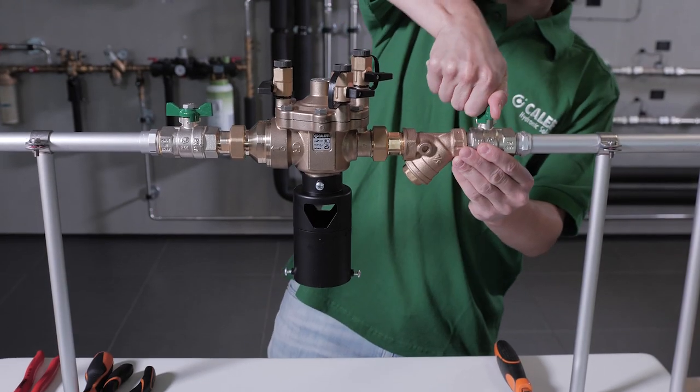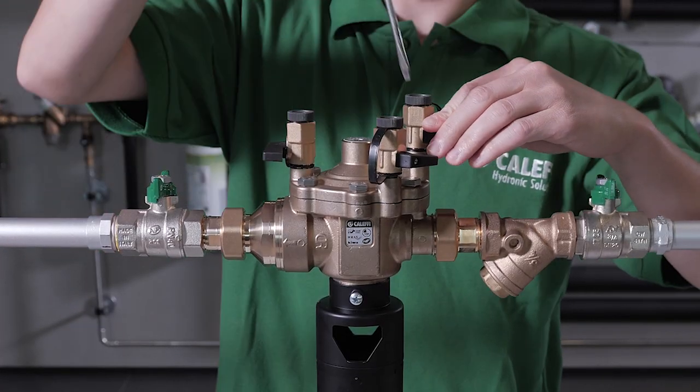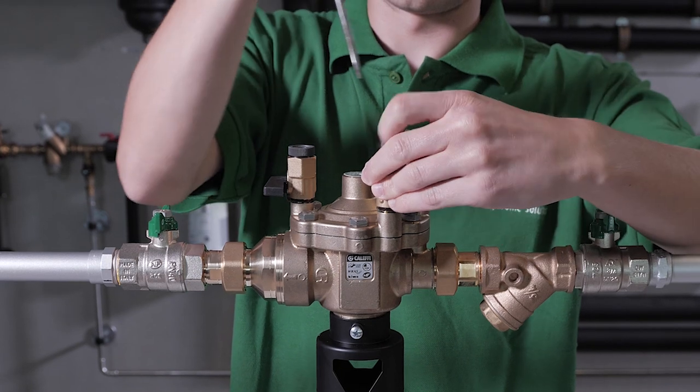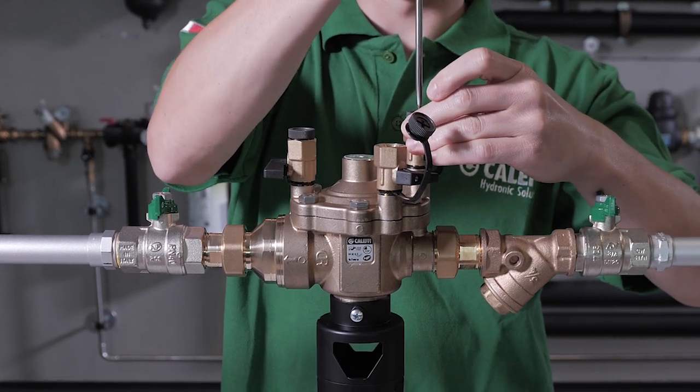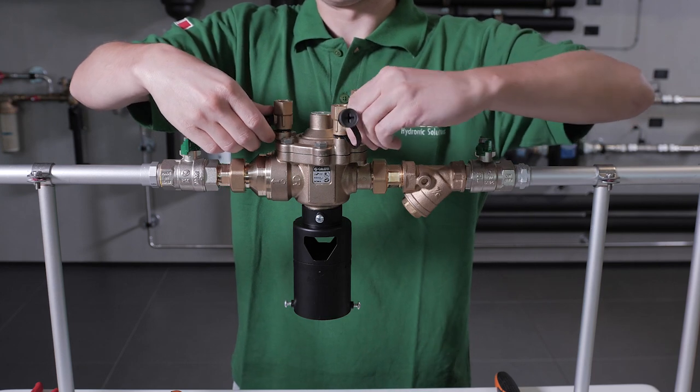Close both the shutoff valves and then vent the air out of the unit with the aid of the pressure ports on the top part of the backflow preventer. This way, the water content in the unit will be discharged.